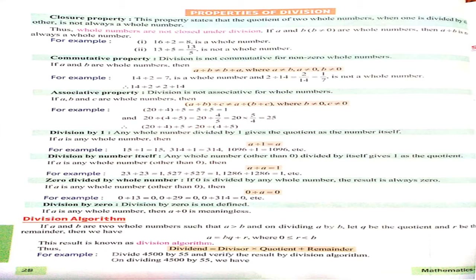Now next, division by the number itself: any whole number other than 0 divided by itself gives 1 as the quotient. If A is any whole number other than 0, then A divided by A equals 1. See the example: 23 divided by 23, the answer is 1. Similarly, 527 divided by 527, the answer is 1.